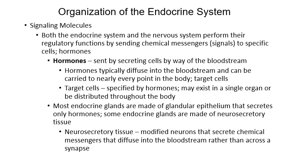Where your nervous system operates by sending electrical signals — action potentials traveling along axons, jumping across synapses from one cell to another — the endocrine system, instead of using electrical signals, uses chemical signals. Those chemical signals are released into the bloodstream as hormones. Hormones are chemical signals produced by glands that travel around the body and target specific tissues. Not every cell in the body has receptors for every hormone.